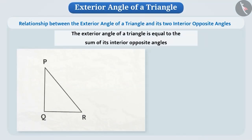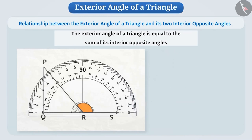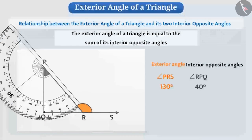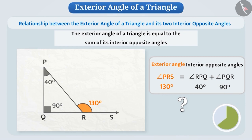Now take a piece of paper, draw triangle PQR, and form its exterior angle PRS. You can make any type of triangle. After making the triangle, find the measure of exterior angle PRS and the interior opposite angles using a protractor. Can you confirm that angle PRS equals angle RPQ plus angle PQR? Why don't you pause the video and find out? Each time you will find that the exterior angle of a triangle equals the sum of its two interior opposite angles.